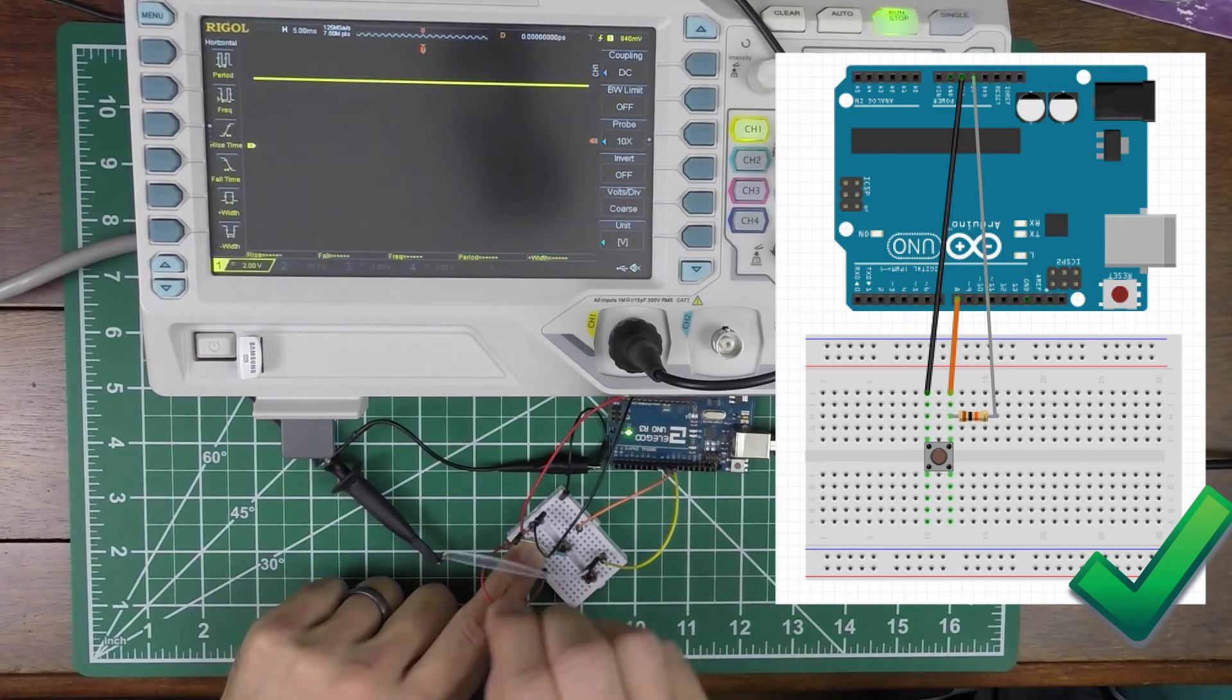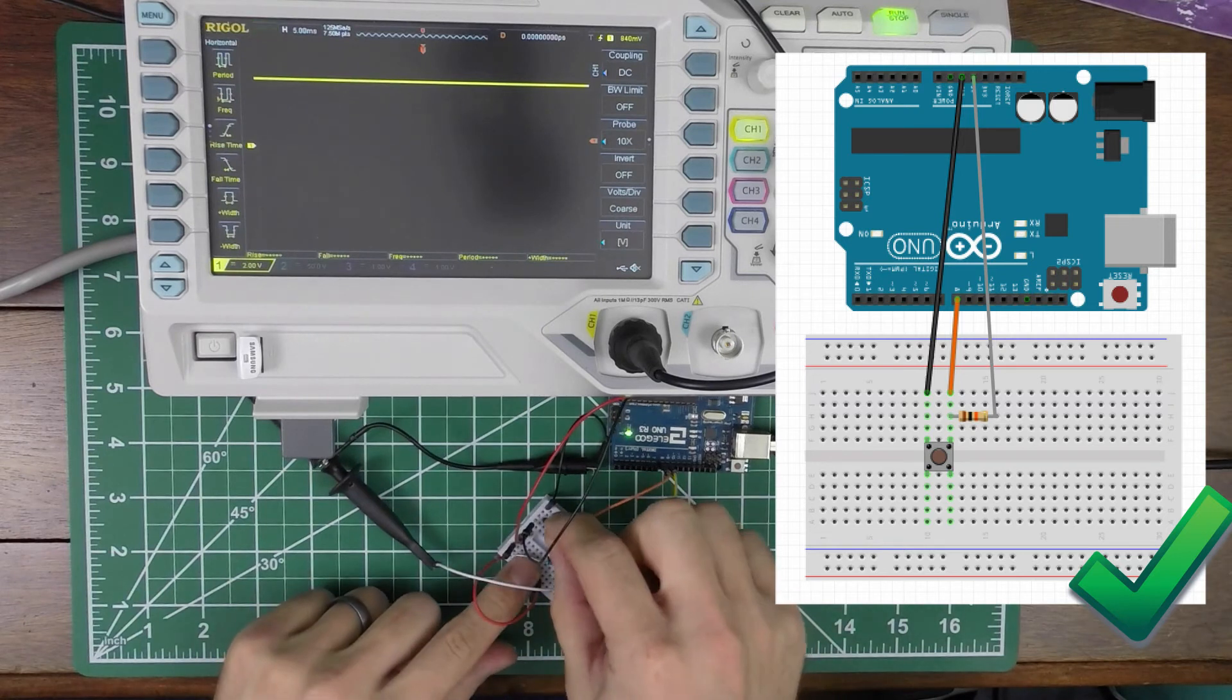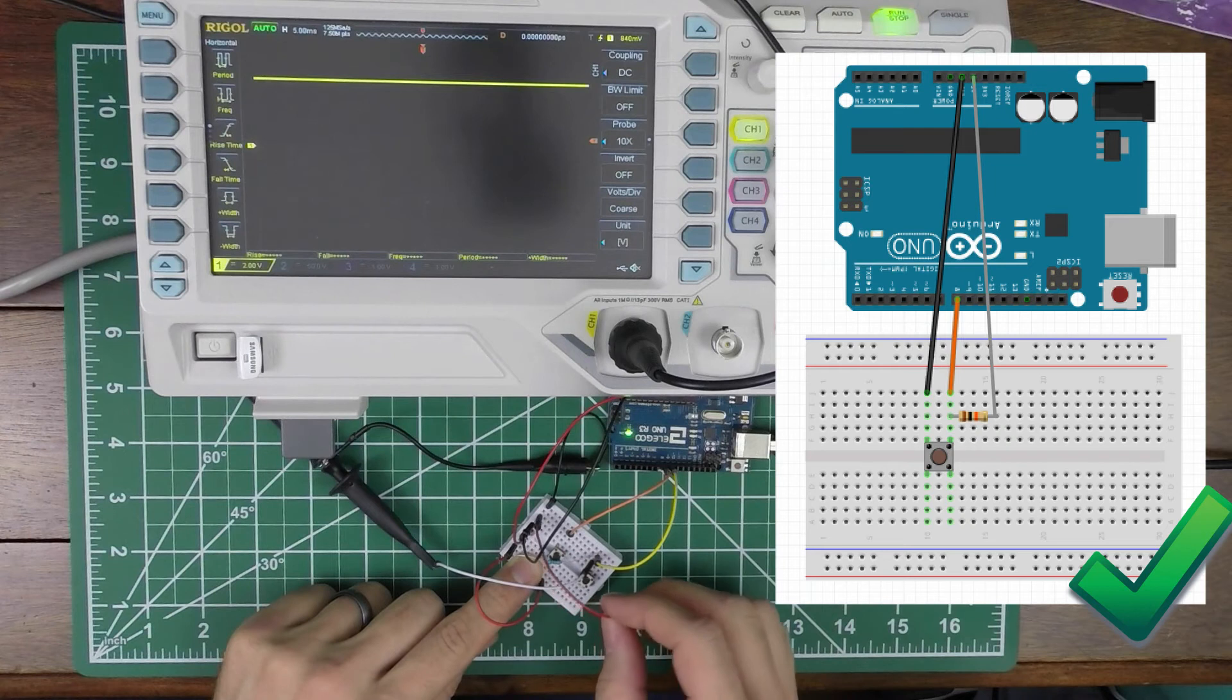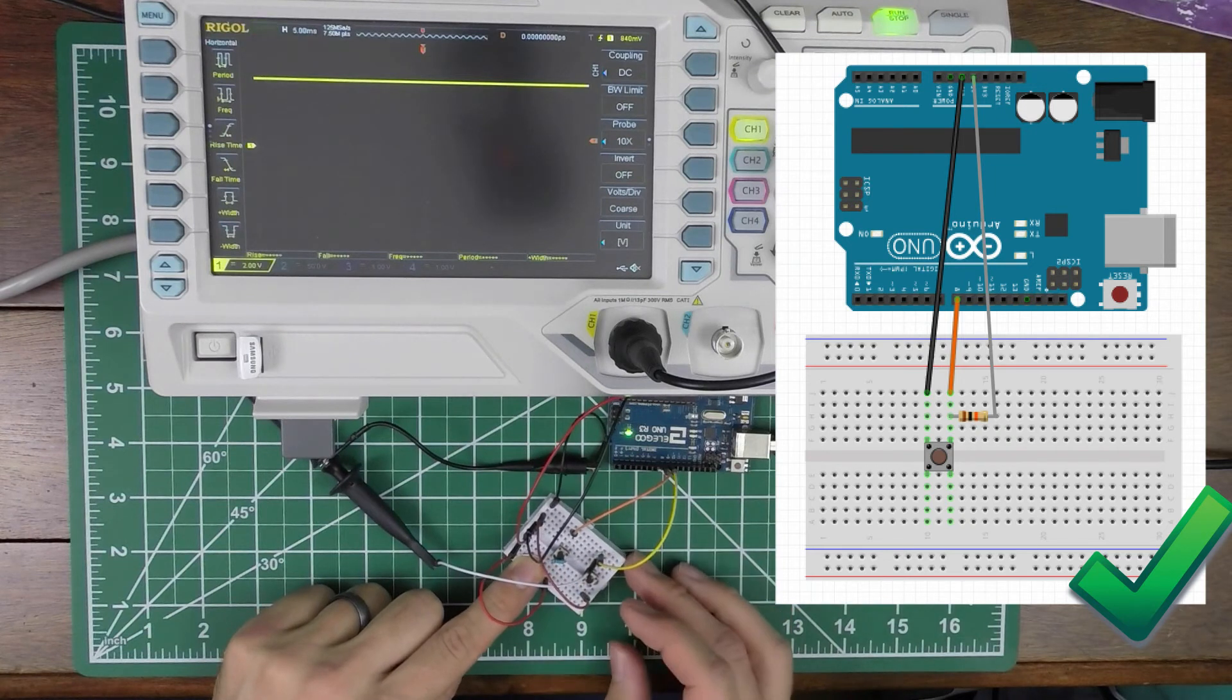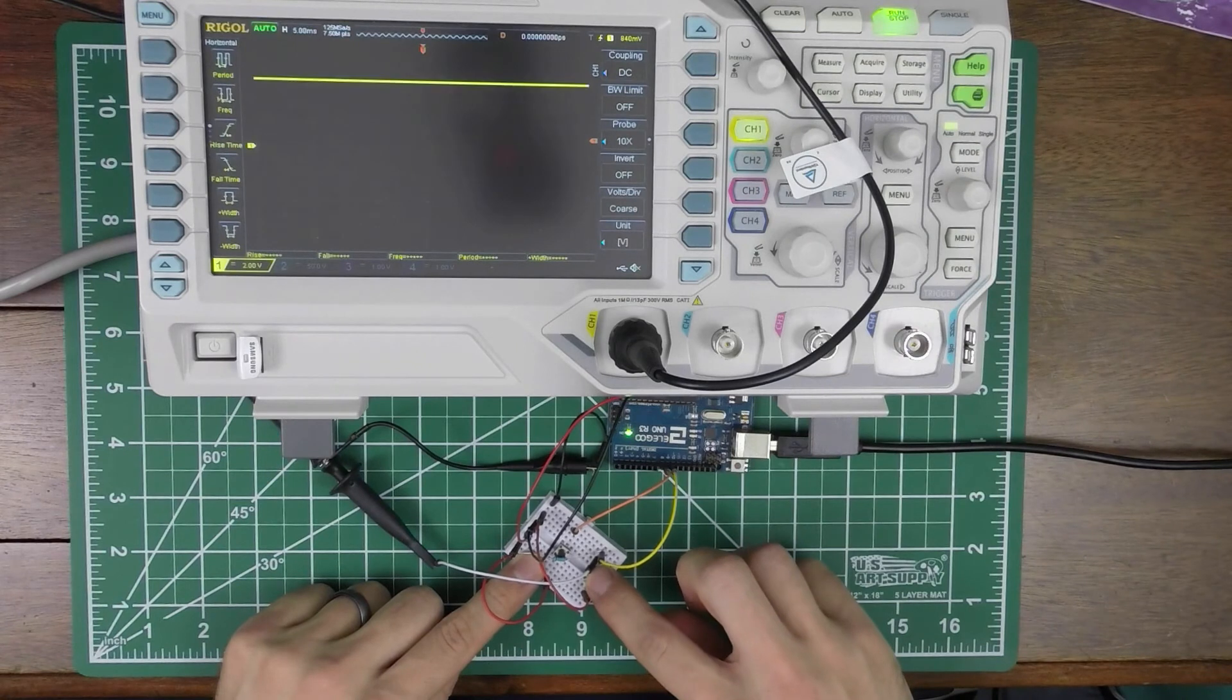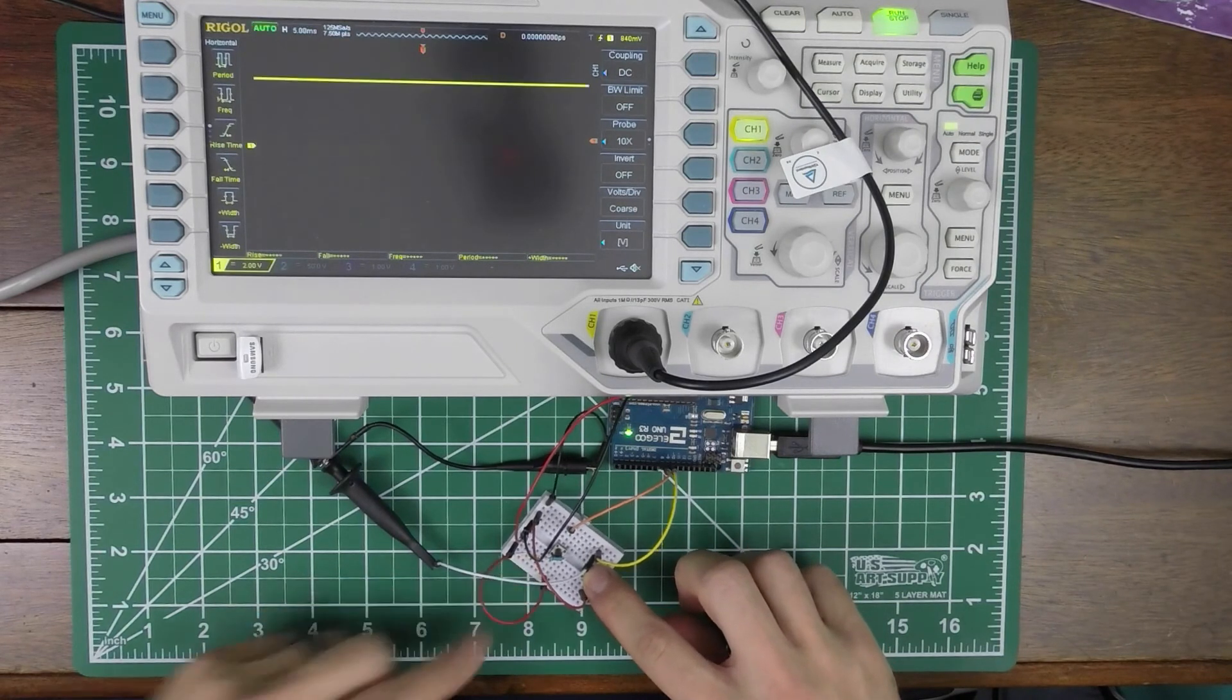So now you can see I have a nice clean high signal. And then if I tied this wire the other side to ground, then I'll get a low signal. But it's still clean. So this is just the reverse.